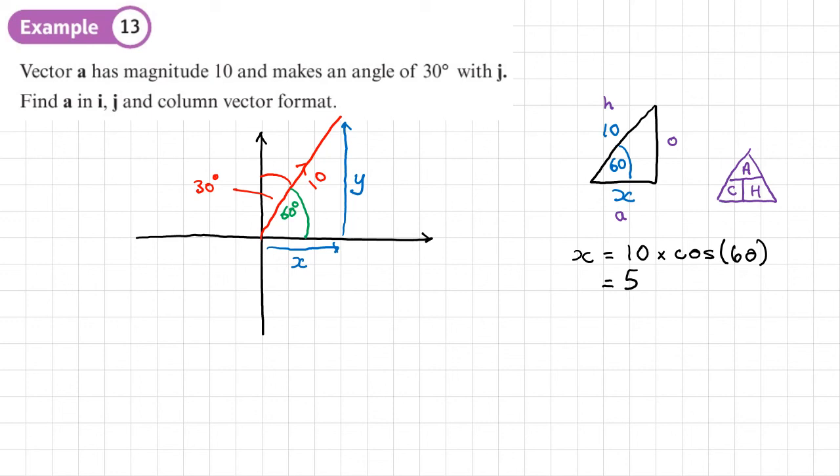And then we'll do a similar diagram to allow us to find out what the y part is. So same sort of diagram again with our 60 degrees here, our 10 here. But this time we want to find this side here, which is y. So again, labelling it up, hypotenuse, adjacent, opposite. This time we have the opposite and the hypotenuse. So this is sine, SOH. So if I want to find a value of y, which is the opposite, I need to do sine 60 times by 10. Or 10 times by sine 60. And the exact value of that is 5 root 3.